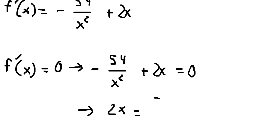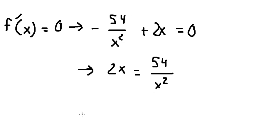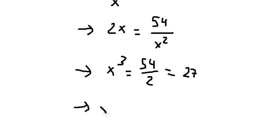We have 2x equals 54 over x squared. I will multiply x squared on the left, and 2 on the right.